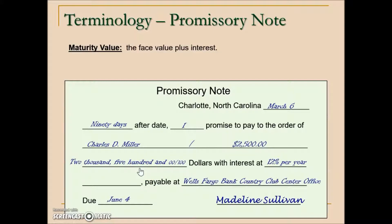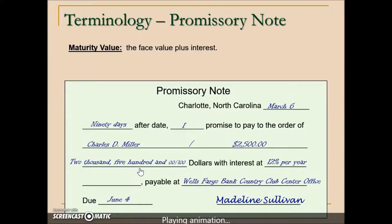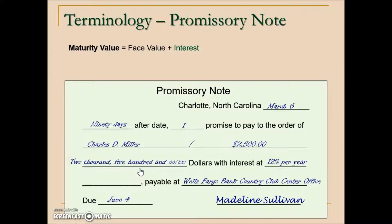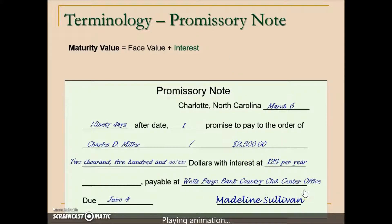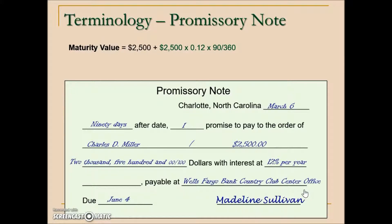Maturity value is the face value plus interest — a formula we've calculated before. This particular promissory note does not have that information listed. It would be the principal plus interest, so we'd need to do a calculation. The note shows the amount borrowed and states they're paying interest at 12% per year, which is simple interest.